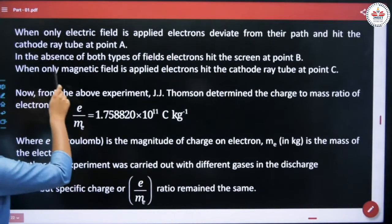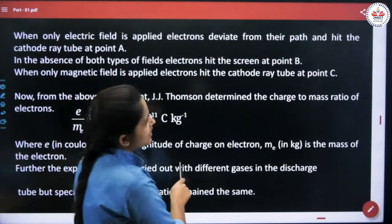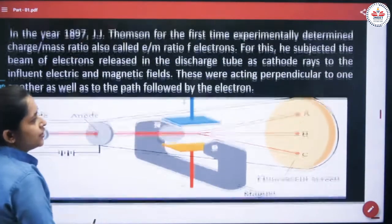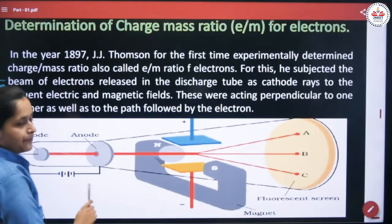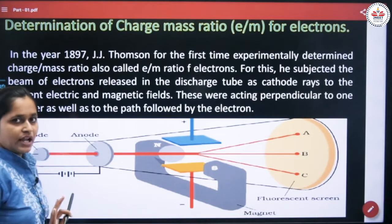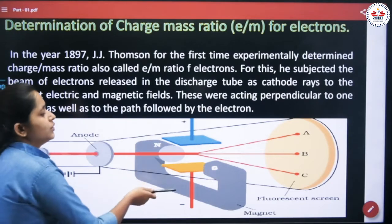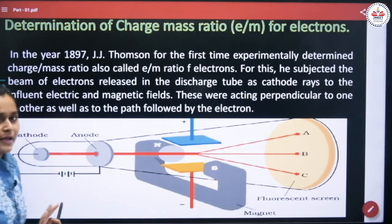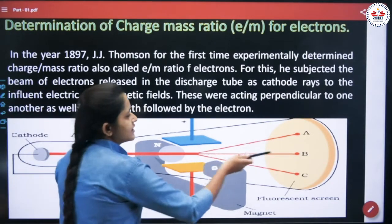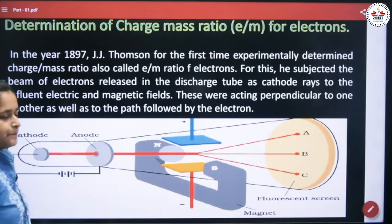In the absence of both types of field — neither electric nor magnetic — the electron hits the screen at point B. The electron rays strike the fluorescent screen at point B when both fields are absent.